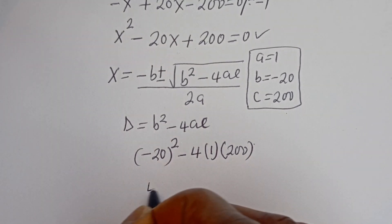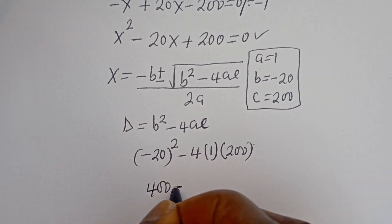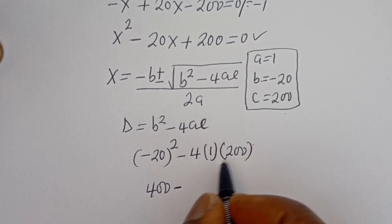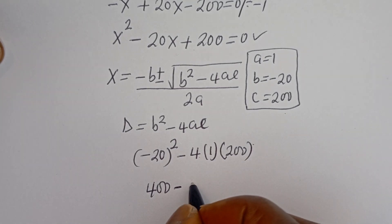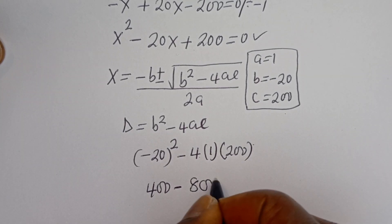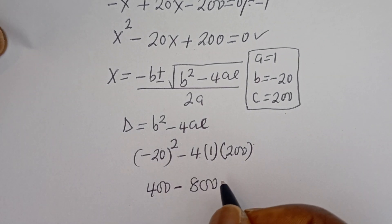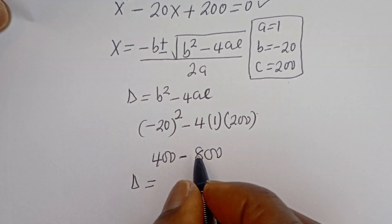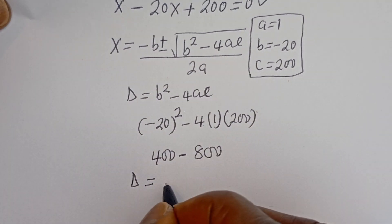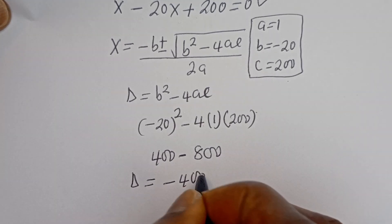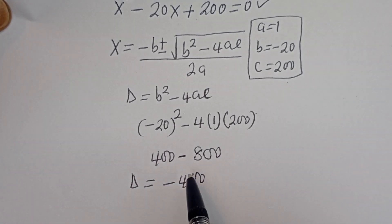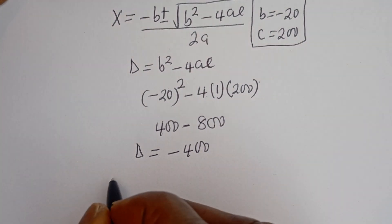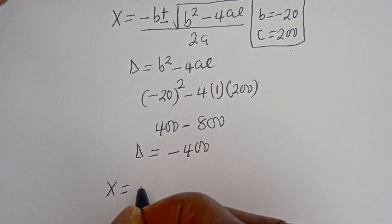Now let's compute the discriminant: D equals B squared minus 4AC, which is minus 20 squared minus 4 multiplied by 1 multiplied by 200. Minus 20 squared is 400, minus 4 times 1 times 200 is 800. So D is equal to 400 minus 800, which is minus 400.